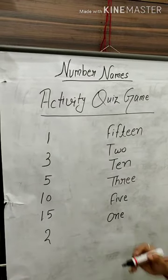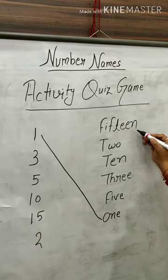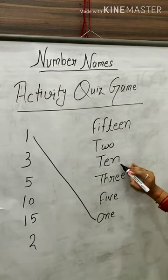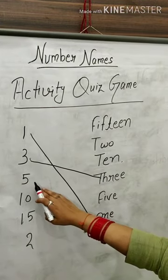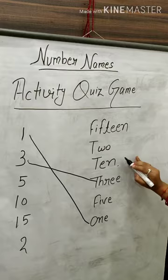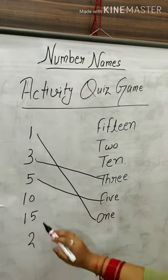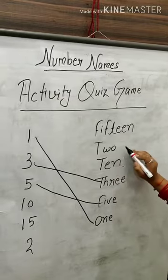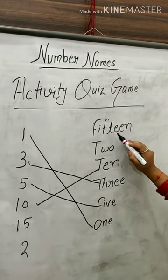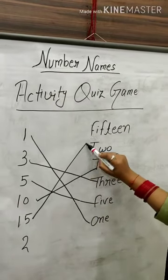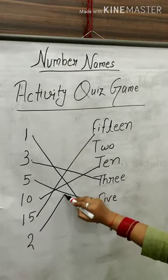That means one is matched, three, fifteen, two, ten, three, five. Ten — fifteen, two. That means ten. Fifteen. Two.